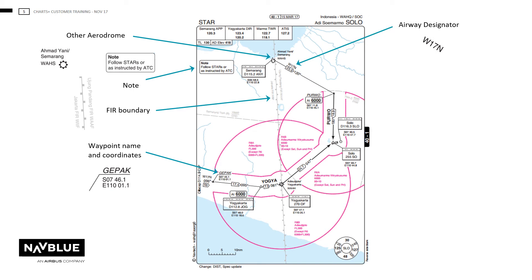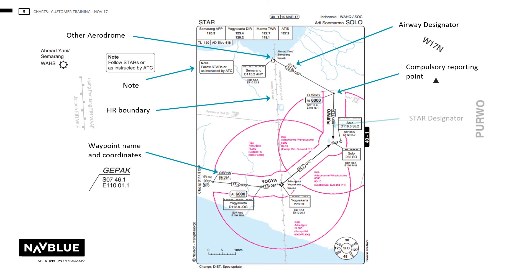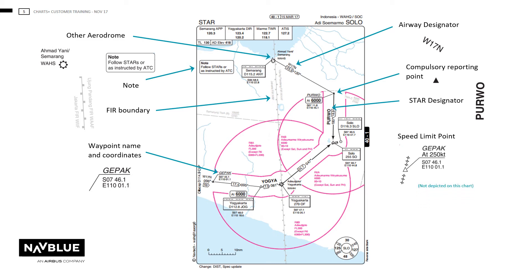The airway designator is shown when required to clarify when an airway joins a STAR or arrival route. The STAR designator is shown along a segment of that procedure. Speed limit points will be shown on all fixes where a speed limit applies, indicated by three little stars either side of the point, with the speed limit underneath the waypoint name or in a floating box.